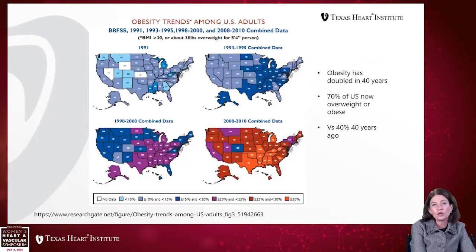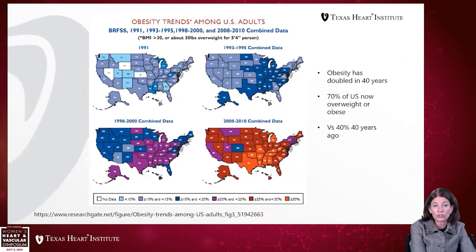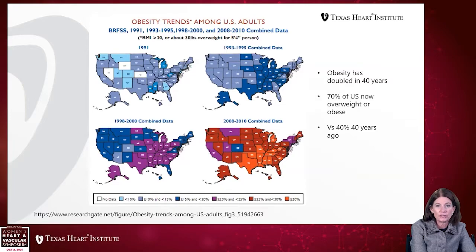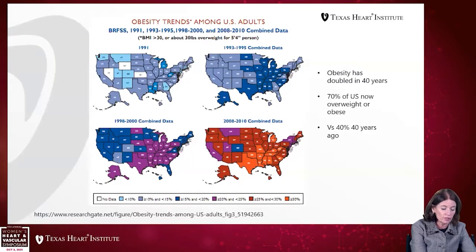So what about obesity? Obesity in America has been increasing over the last 40 years — it has doubled in 40 years, and 70% of US citizens are now considered overweight or obese, increased from 40% forty years ago. From 1991 to 2010, the average American has gone from a 10 to 20% risk of being obese to now most Americans in states with a great propensity having a BMI over 25.